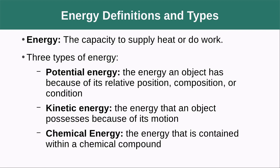Energy is the capacity to supply heat or do work. Any time anything gets hot, absorbs heat, or is physically moving around, it's expending energy. There are three types of energy we're going to discuss. First, there's potential energy — the energy an object has because of its relative position, composition, or condition. You can think of potential energy as the energy that an object can potentially release.